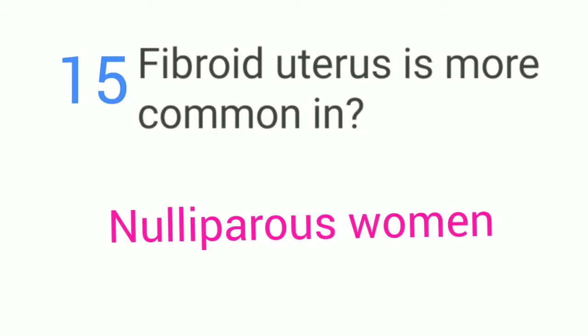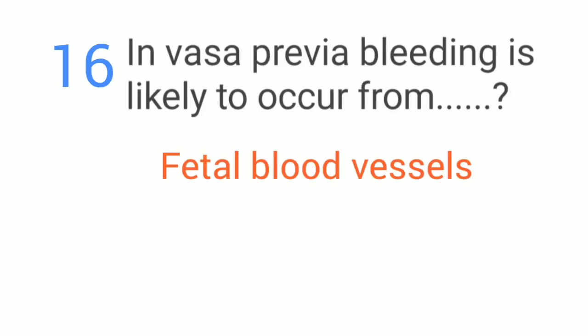Fibroid uterus is more common in nulliparous women. In vasa previa, bleeding is likely to occur from fetal blood vessels.